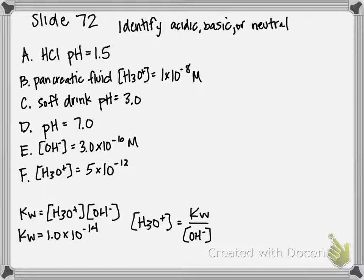So for A, HCl, which is an acid, has a very low pH, less than 7. That one's pretty obvious. This is going to be acidic.